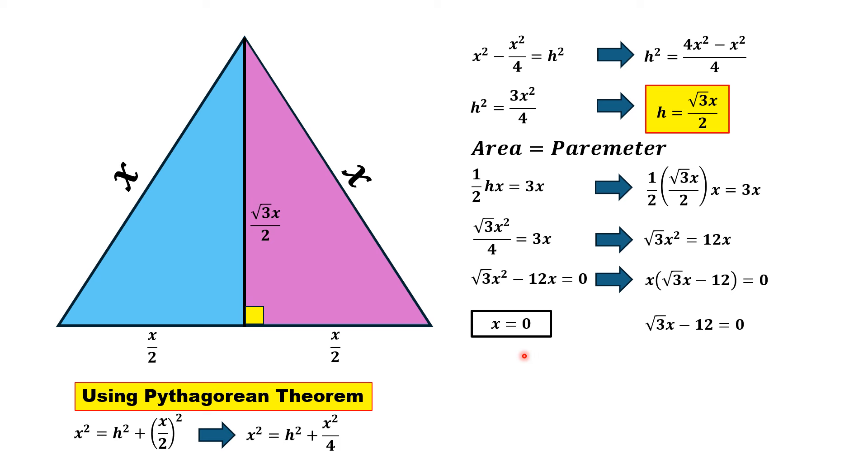In geometry, x = 0 is impossible, so this root is rejected. We deal only with √3x - 12 = 0. Taking 12 to the right, we have √3x = 12.